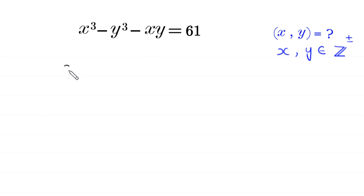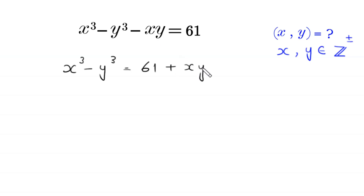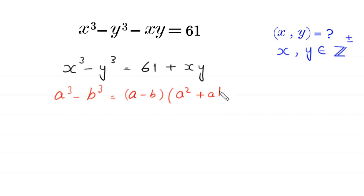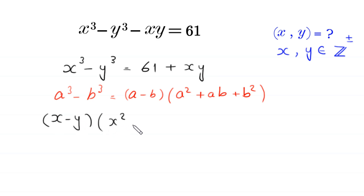Then this equation will become x cubed minus y cubed is equal to 61 plus xy on the right hand side. Now by using the algebraic identity a cubed minus b cubed equals a minus b times a squared plus ab plus b squared, this x cubed minus y cubed will become x minus y times x squared plus xy plus y squared, equal to 61 plus xy.